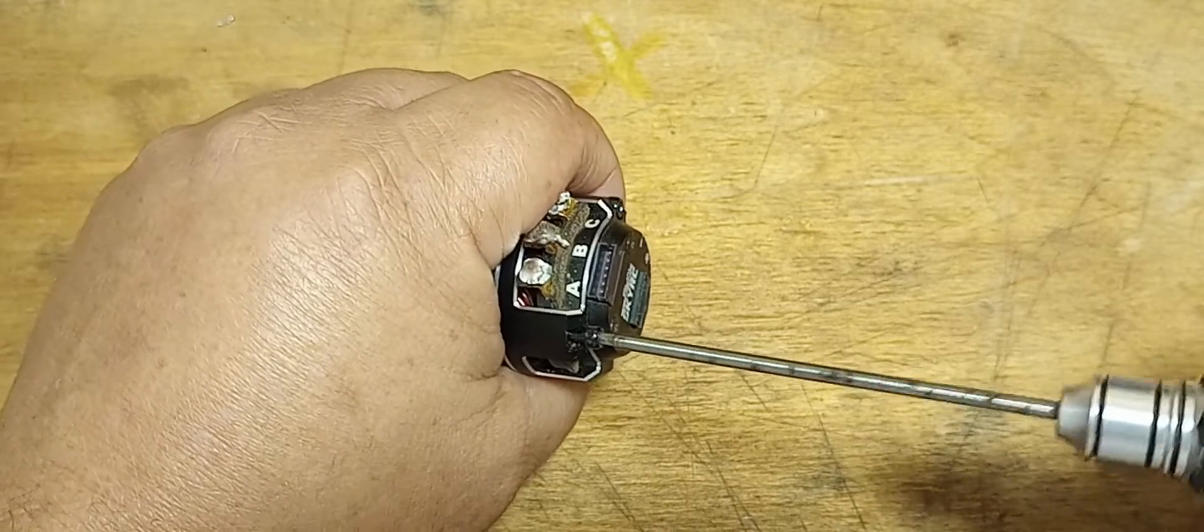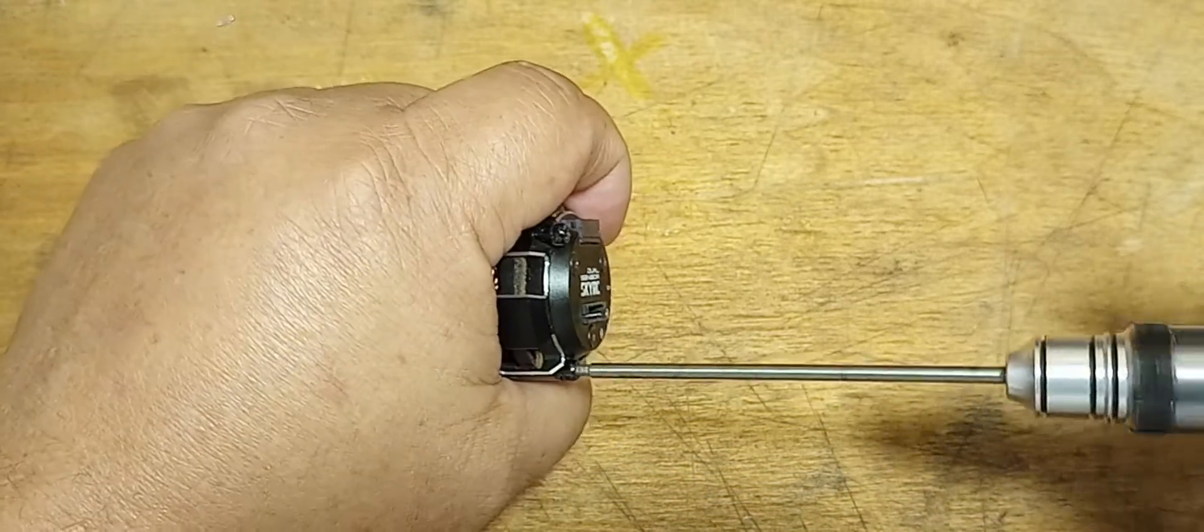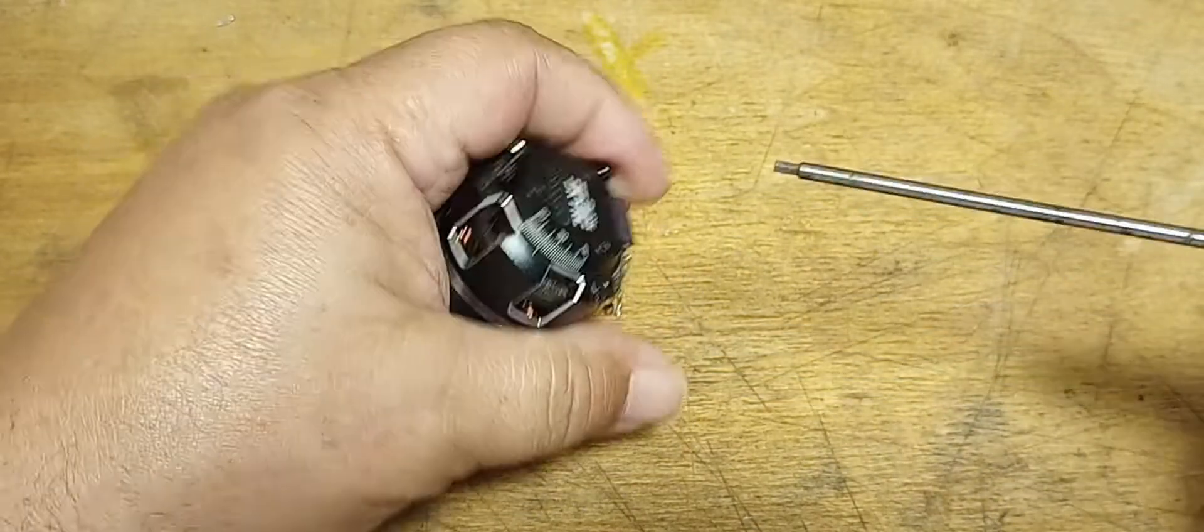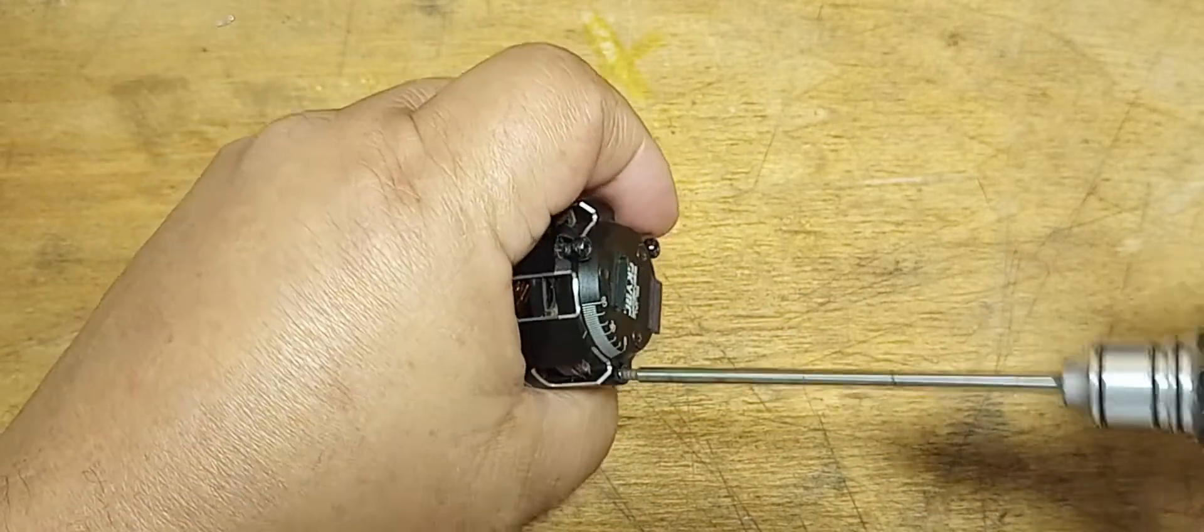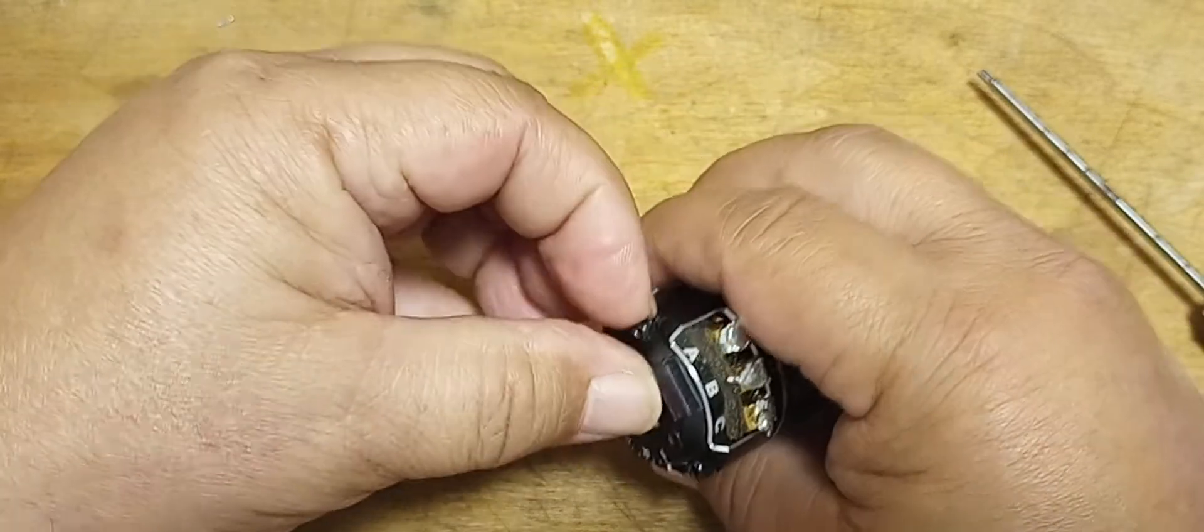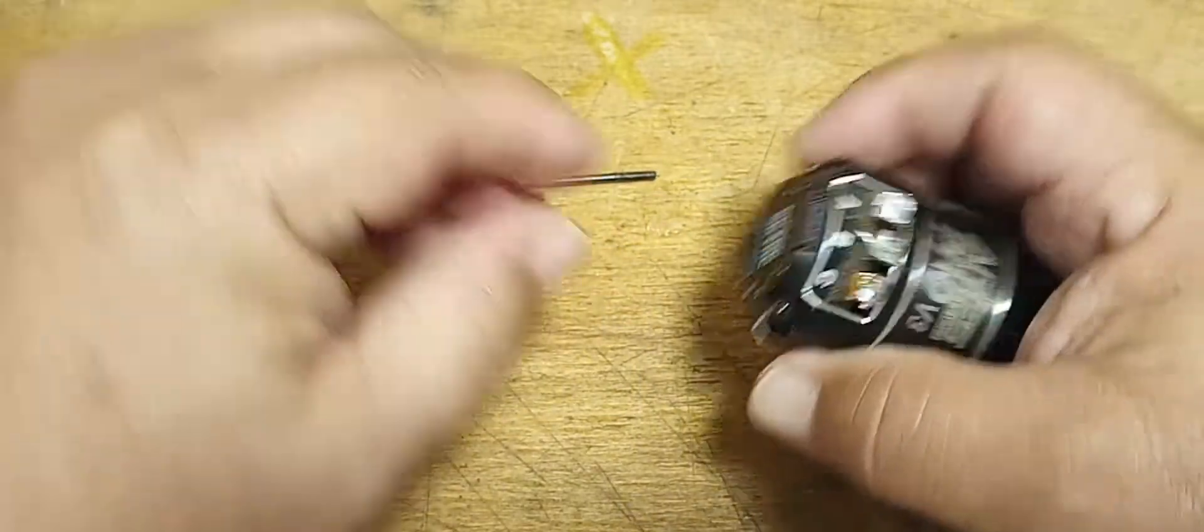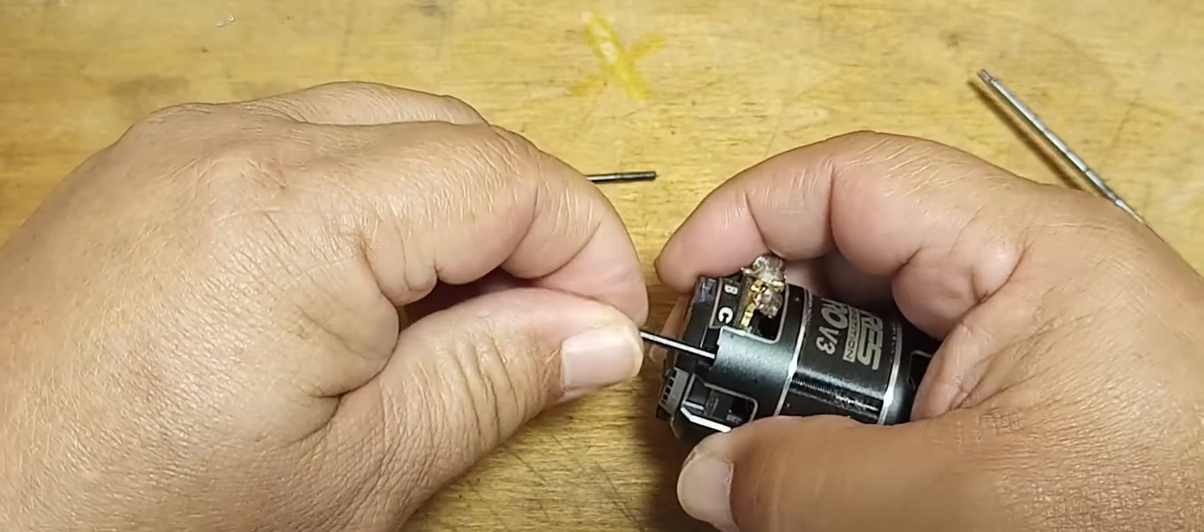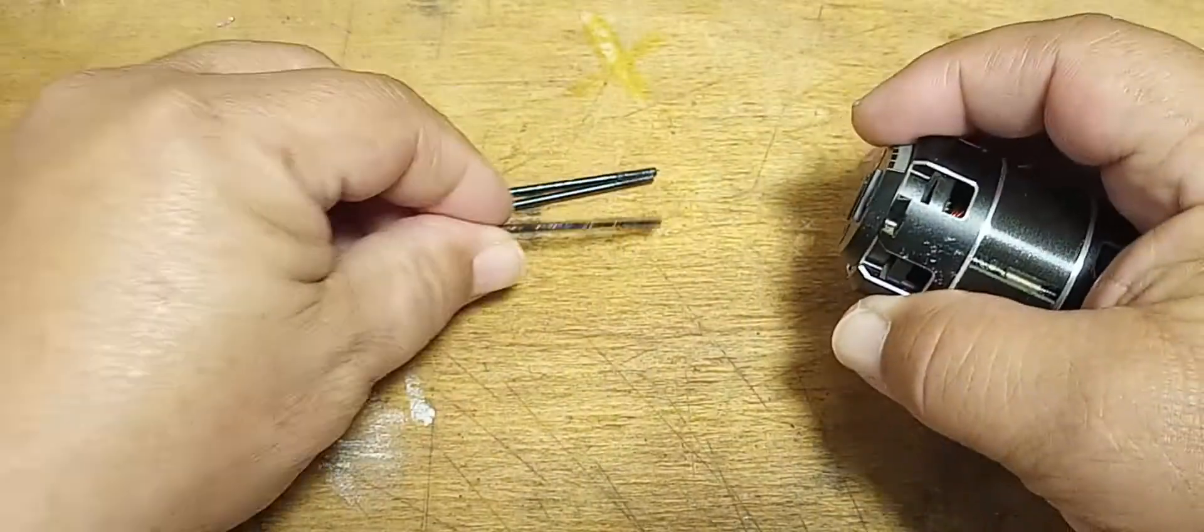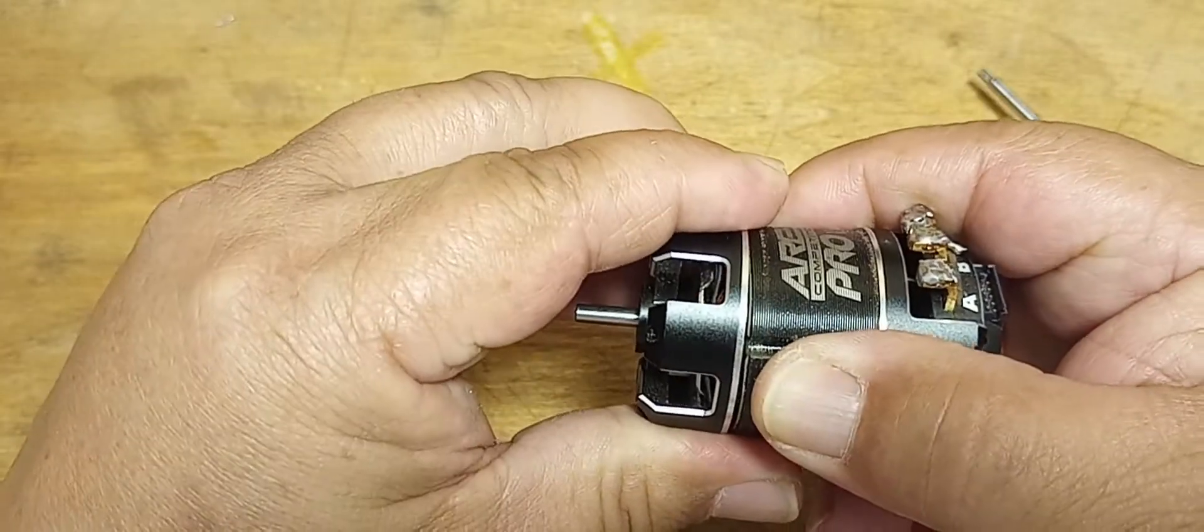I'll pull these screws out. I'll probably find some dirt because I didn't blow this motor out. There's probably some dirt in there too. Steel screws. Front section.